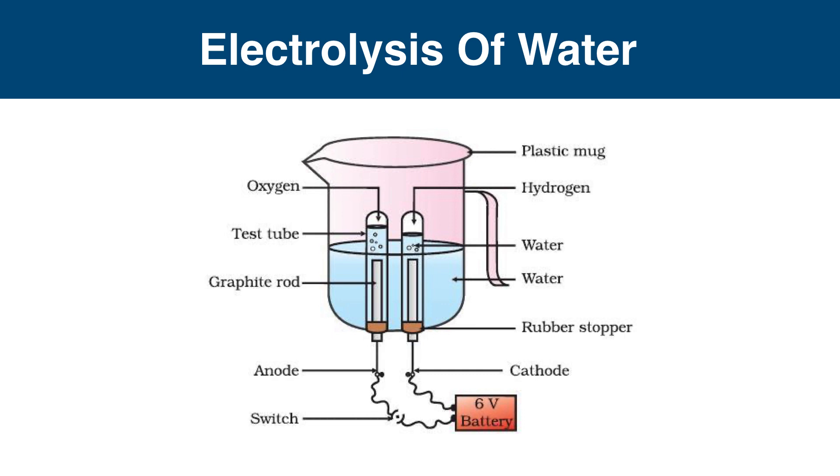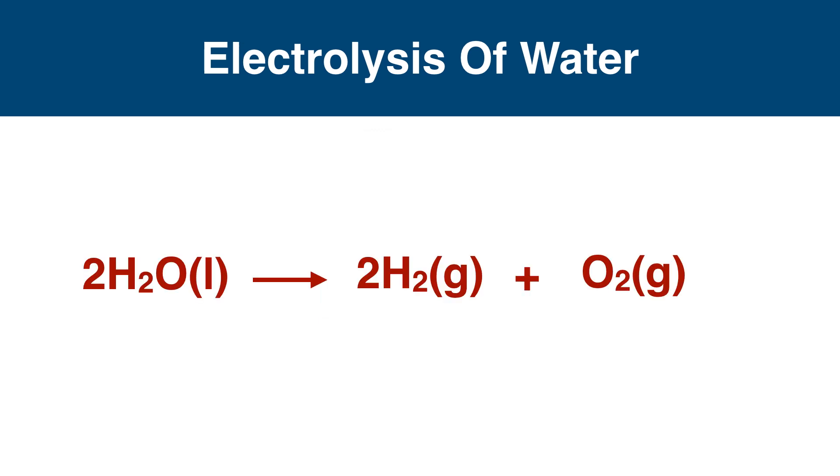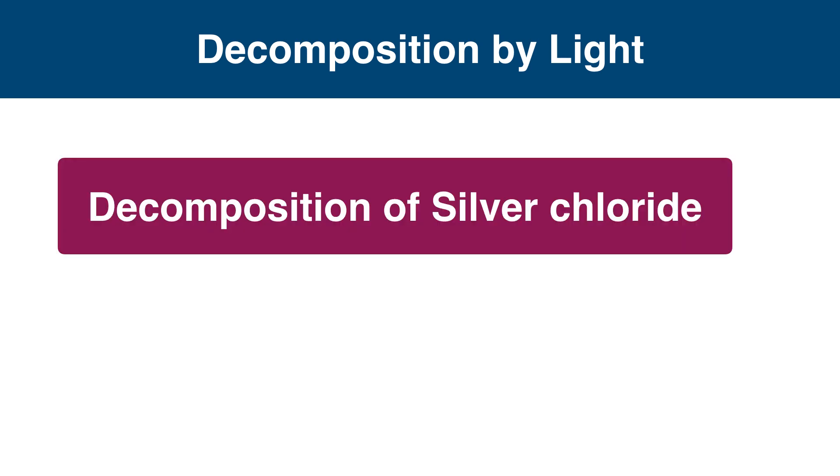We can observe hydrogen gas bubbles are formed in the test tube at the cathode side, and oxygen gas bubbles are formed in the test tube at the anode side. The equation of this reaction is 2H2O → 2H2 + O2. Water decomposes to hydrogen gas and oxygen gas by electrolysis. Next is decomposition by absorbing light.